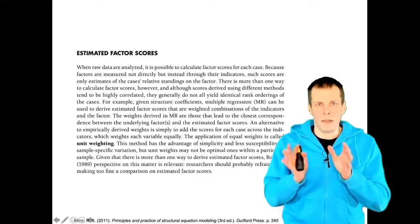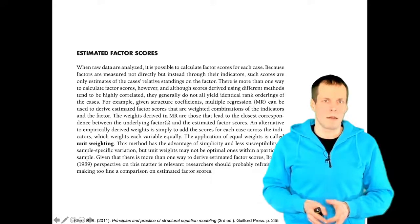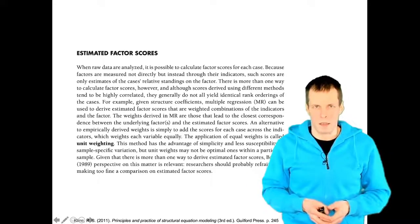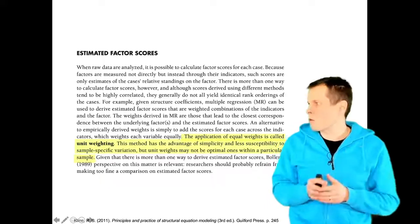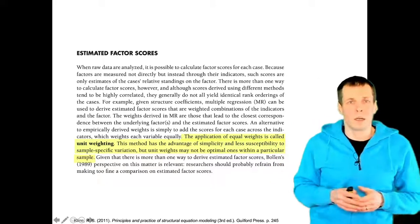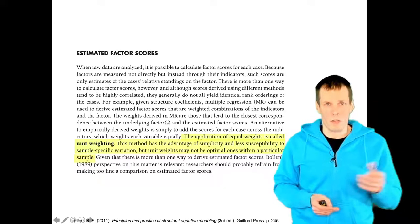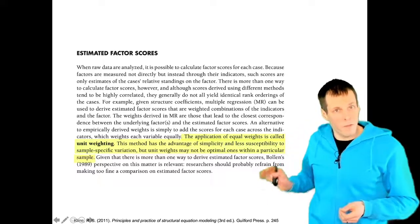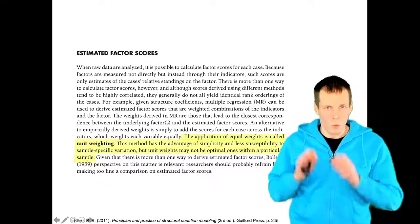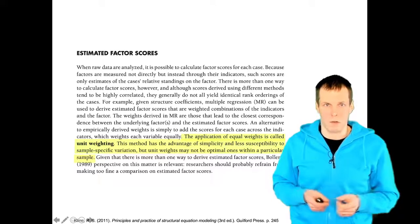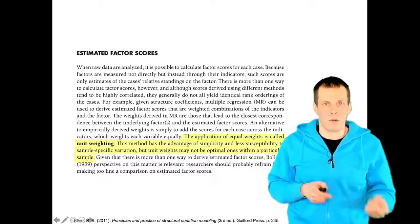Factor scores are commonly used post-estimation and are calculated as a weighted sum of the indicators. There is also a robust way of calculating scores called unit weighting, in which you simply take a sum of the items belonging to a single scale and use that as your factor score. That is pretty much the only way you should ever calculate factor scores. To understand why, we need to understand what factor scores do.